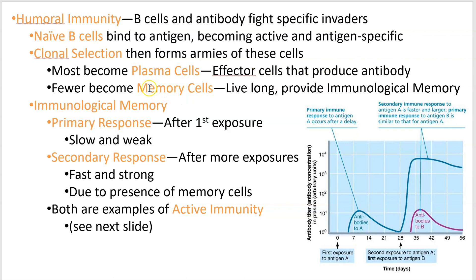But a small number of them become this elite class called memory cells. Memory cells don't produce antibody, but they hang around. Even after you defeat that first infection, memory cells will live year after year — decades sometimes. A decade later when you get the same bacterium, these guys are going to respond to it. Not all of them live decades and you sometimes need boosters, but we'll talk about that.